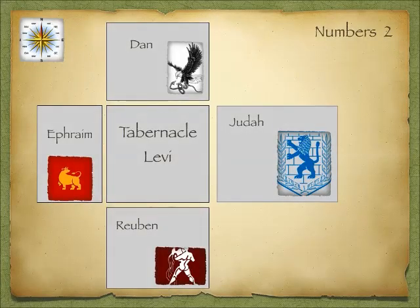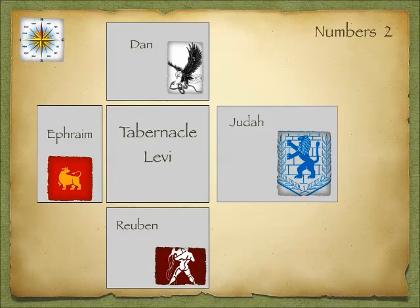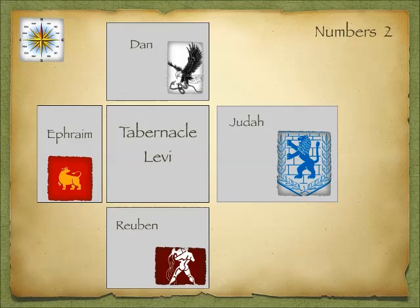Beyond that, each tribe had a flag. Here I have set the flags of the leading tribe from each group. For Judah, of course, we have the lion. For Reuben, I have chosen a specific picture — Reuben is a man; his name means 'Behold a Son.' On the short side you have the tribes with Ephraim, for which I've chosen the bull. And finally Dan, who is represented as an eagle holding a snake.